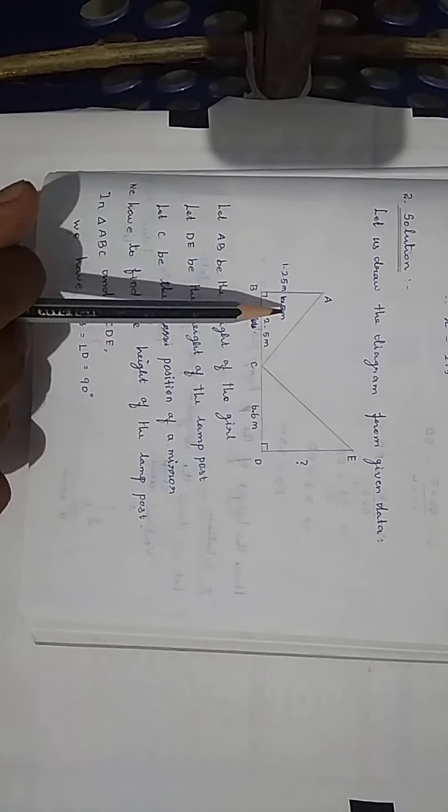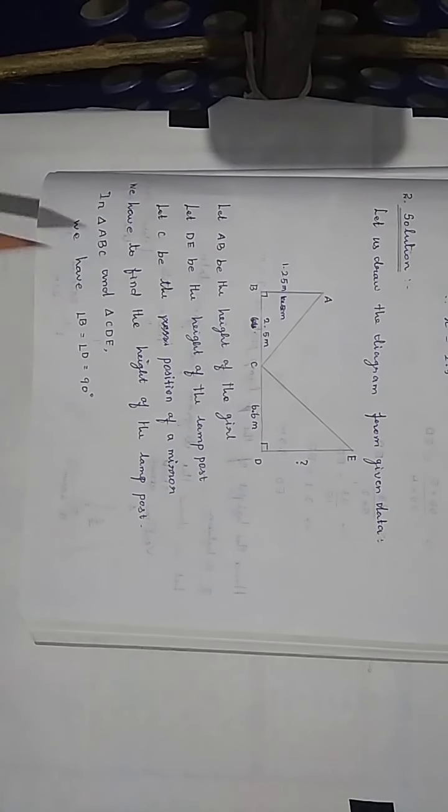To find the height of the lamp post, we need to show the two triangles are similar, so that the corresponding sides are proportional. First we have to check if the two triangles are similar or not, and apply the appropriate criteria. Angles B and D are 90 degrees. By the mirror rule, the angle of reflection is equal to the angle of incidence.